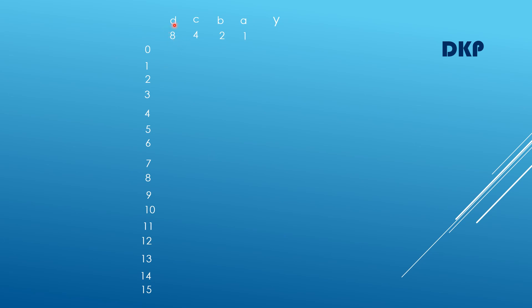8 is 2 to the power of 3, 4 is 2 to the power of 2, 2 is 2 to the power of 1, and 1 is 2 to the power of 0. The binary of 0 is 0000. What is the binary of 1? By using the 8-4-2-1 trick, write 1 under the 1 column and the remaining bits are 0s. What is the binary of 2?